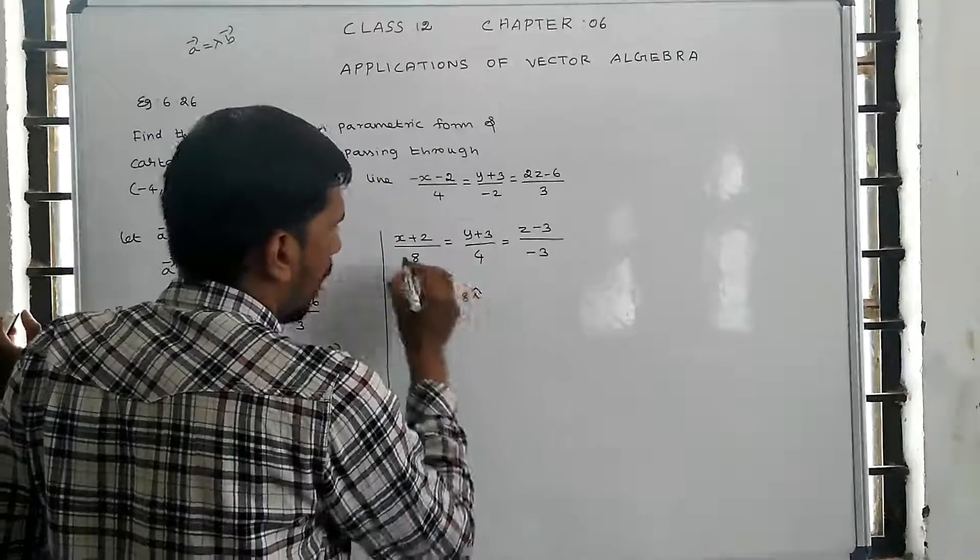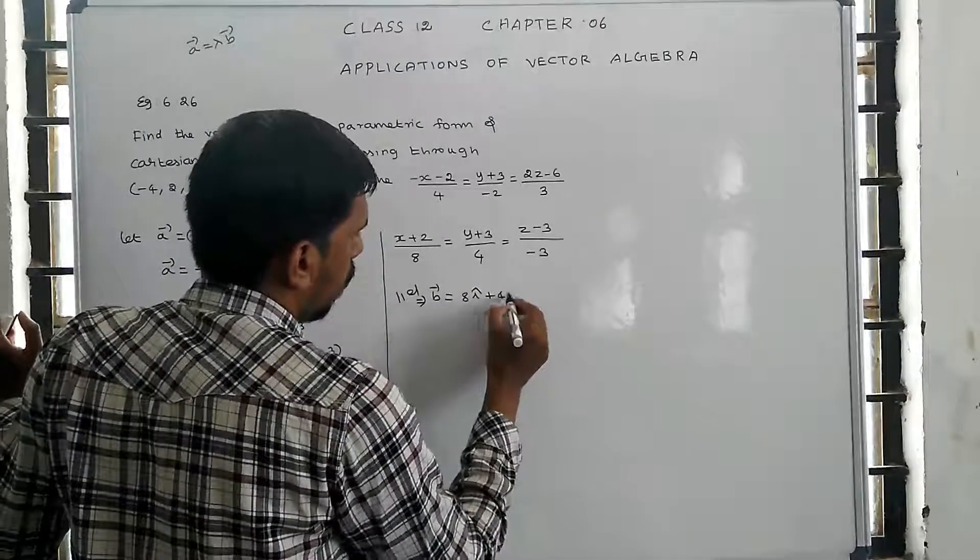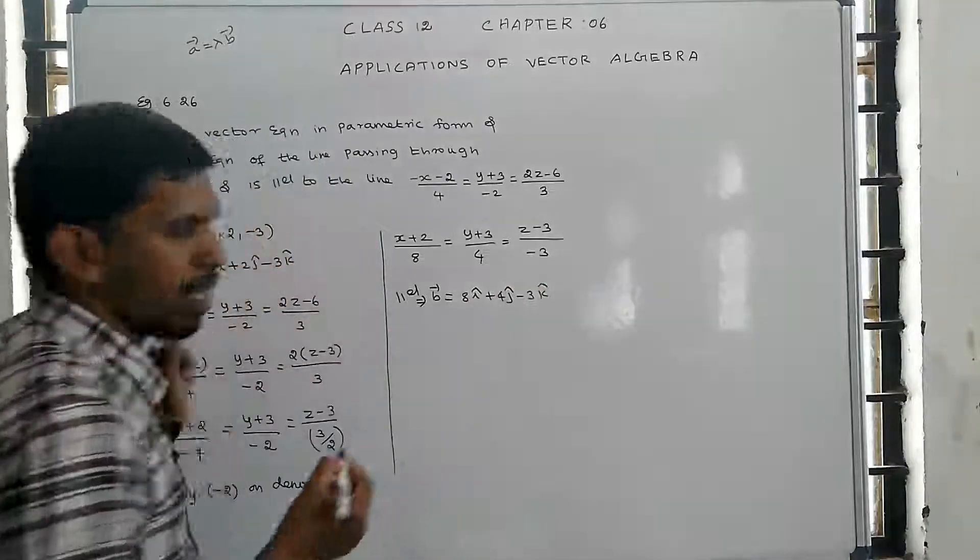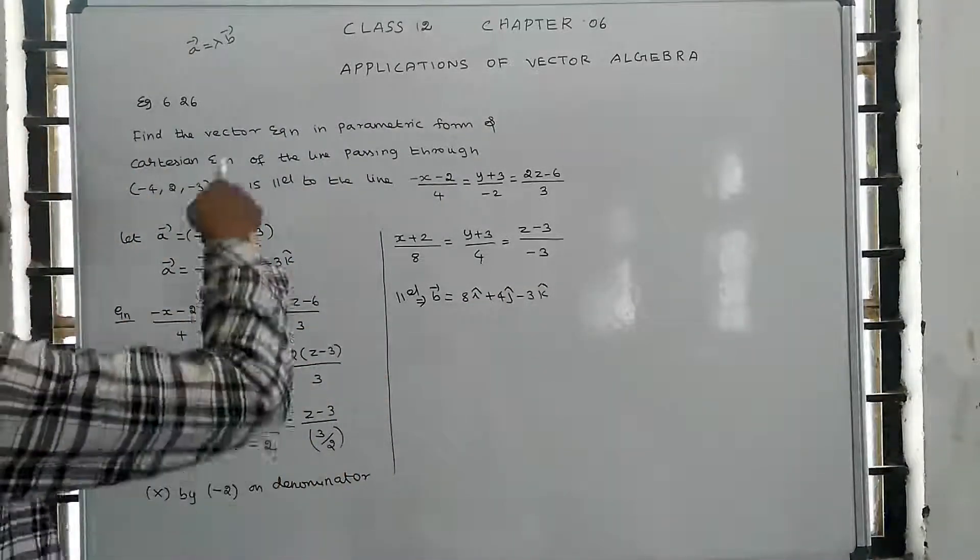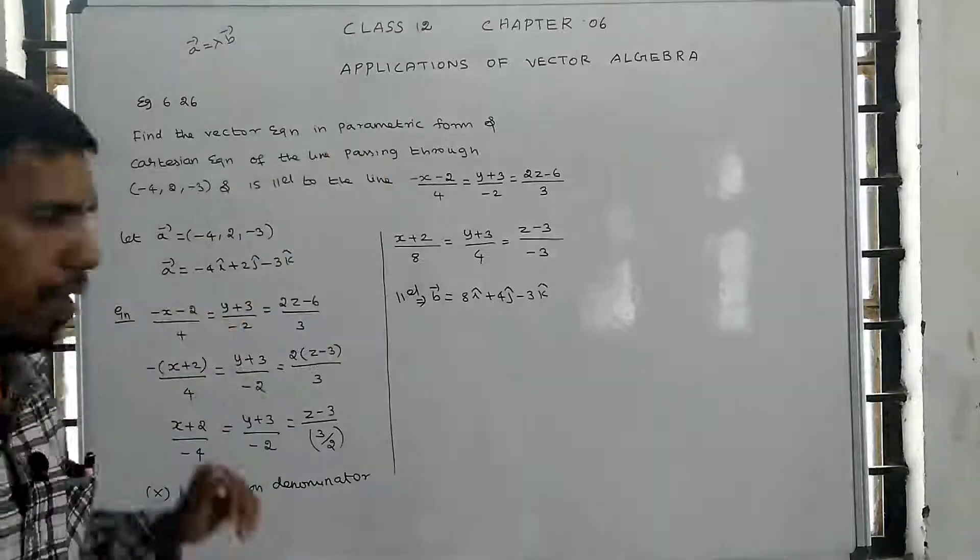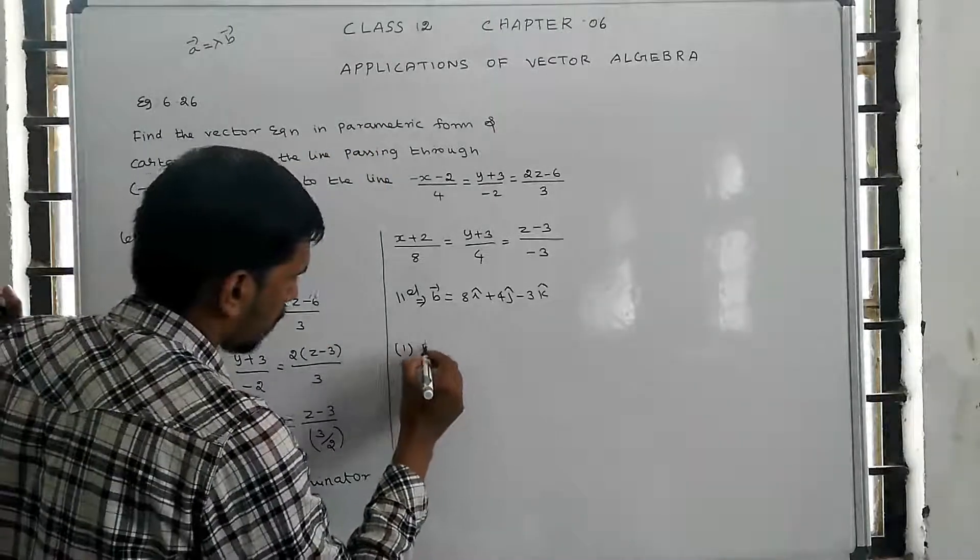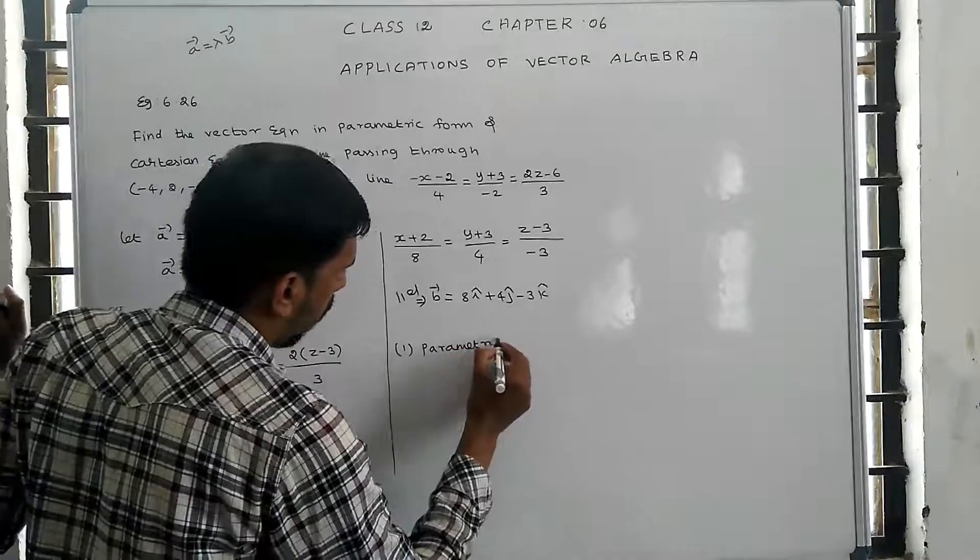B vector equals 8 i cap plus 4 j cap minus 3 k cap. This is the parallel vector. Now we can write the parametric form, which requires one point and one parallel vector.